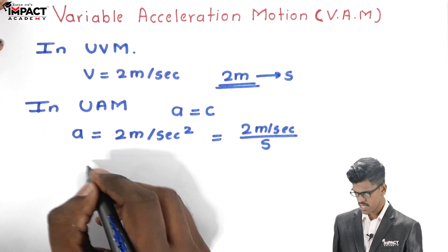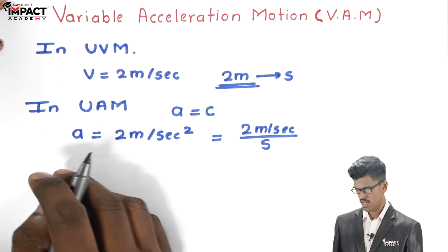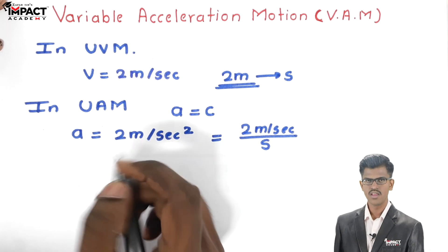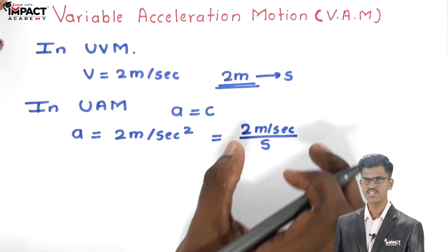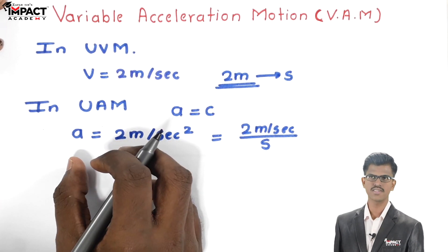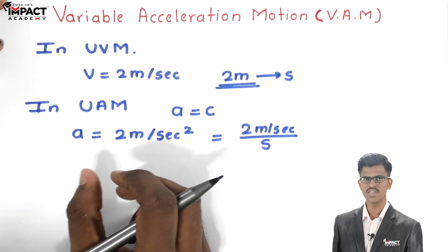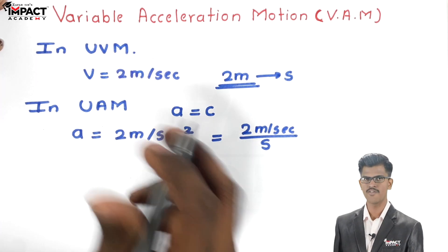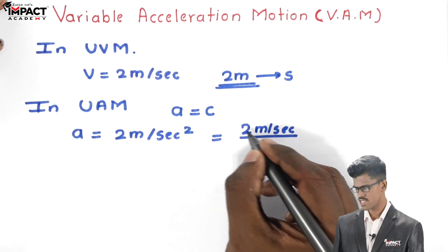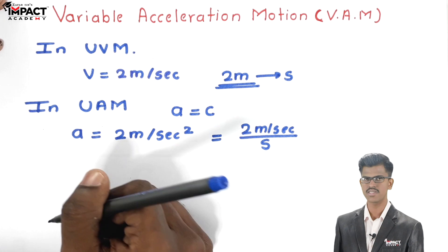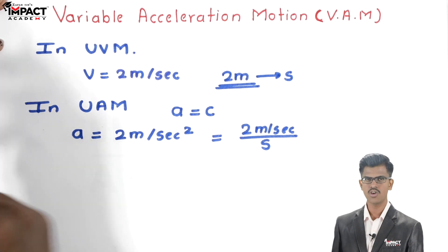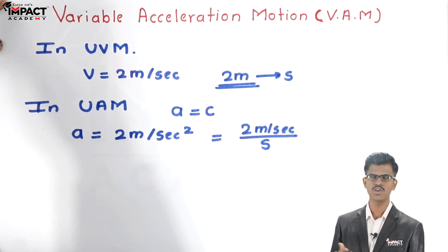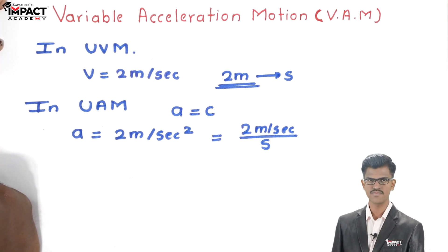In the first interval, in one second the particle velocity is 2 meters per second. In the next one second, the velocity of the particle is 4 meters per second, because in every second the velocity of the particle goes on increasing.